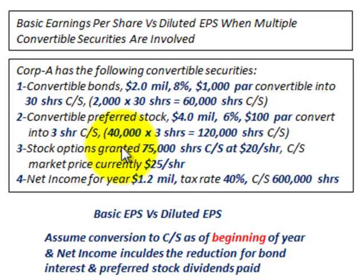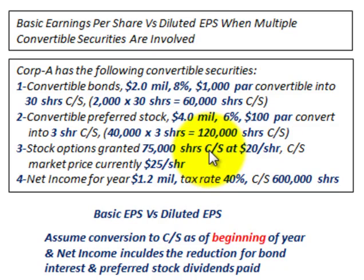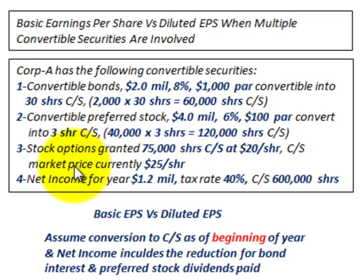There are also stock options granted: 75,000 shares of stock options outstanding during the year, and they can be converted into common stock at a price of $20 per share. The common stock's current market price is $25 per share.